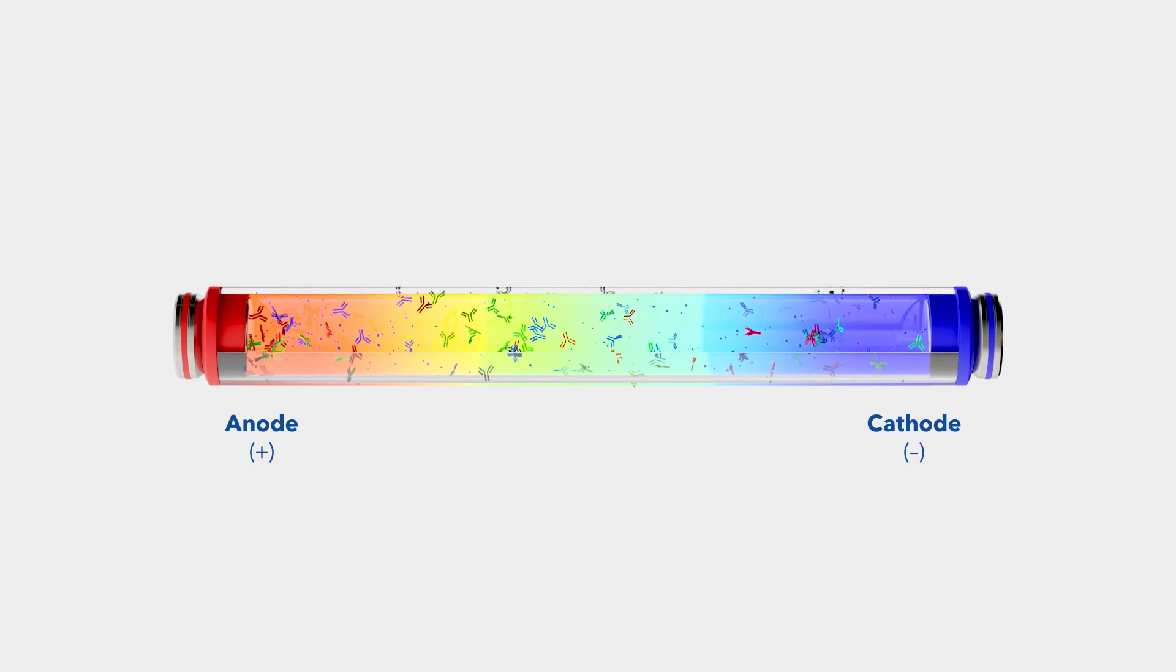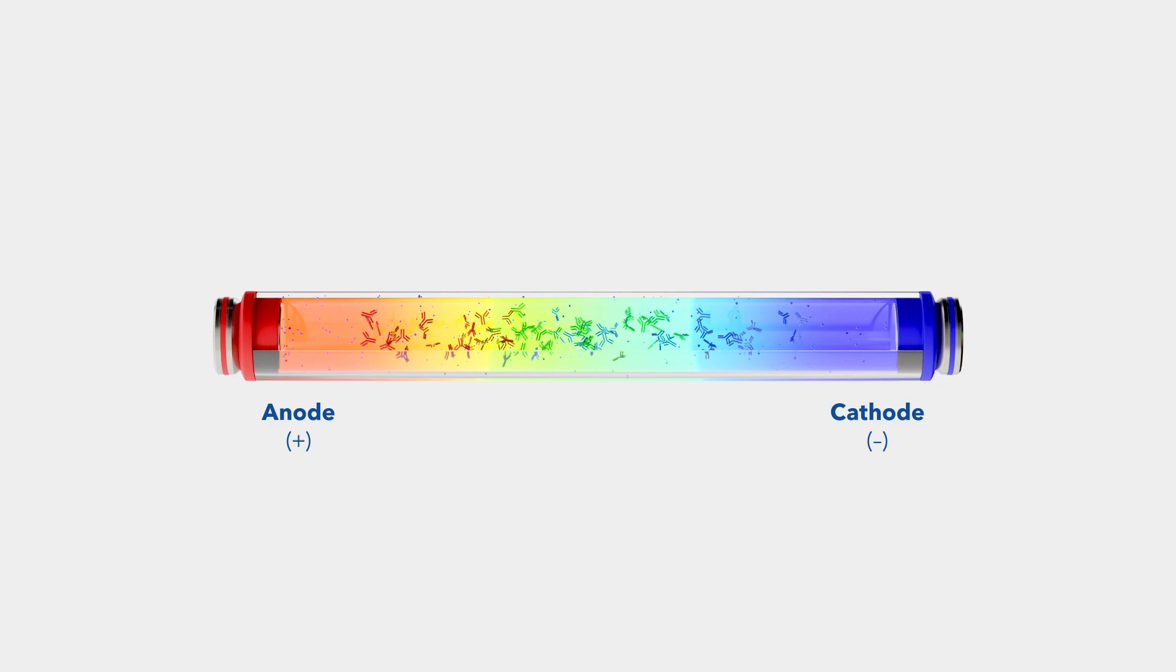Proteins with different isoelectric points or PI values then migrate along the capillary until they reach their matching pH. MauriceFlex then images the whole capillary to allow visualization of the separated proteins.